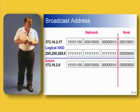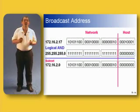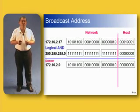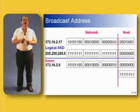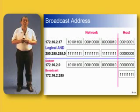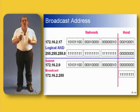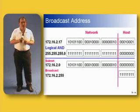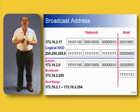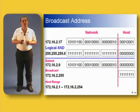Let's do it again with the same address 172.16.2.17, but a different mask this time: 255.255.255.0. We do the logical AND between the two addresses and get a subnet address of 172.16.2.0. We know that if we set the host portion to all ones and add in the subnet portion of the address, that gives us the broadcast address of 172.16.2.255. So the host range is from 172.16.2.1 all the way up to 172.16.2.254.